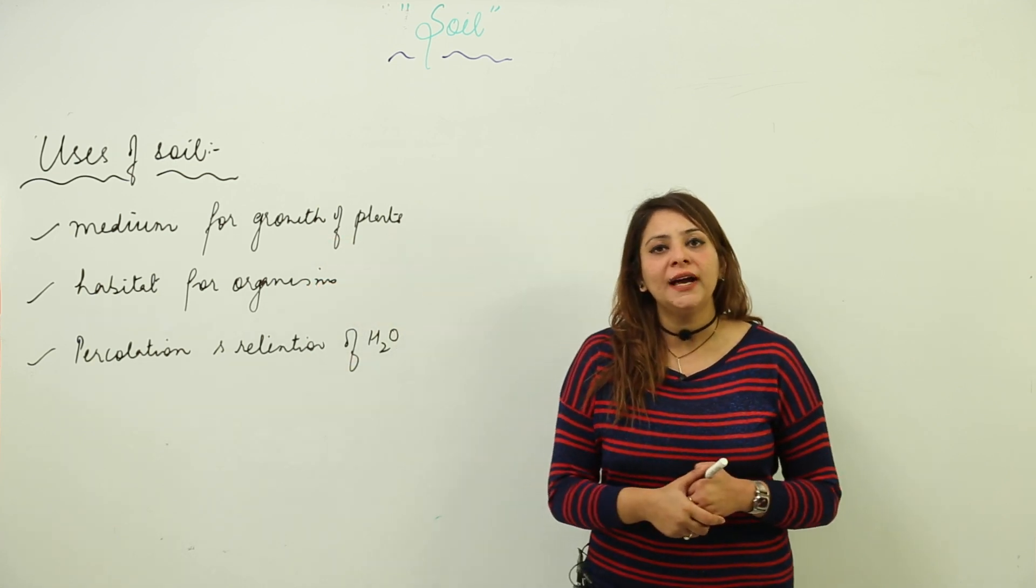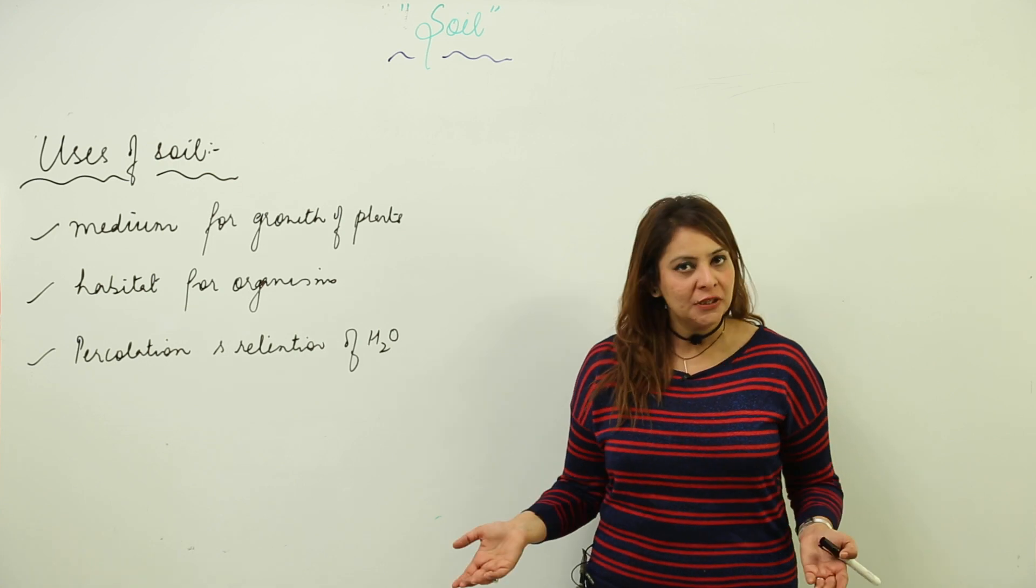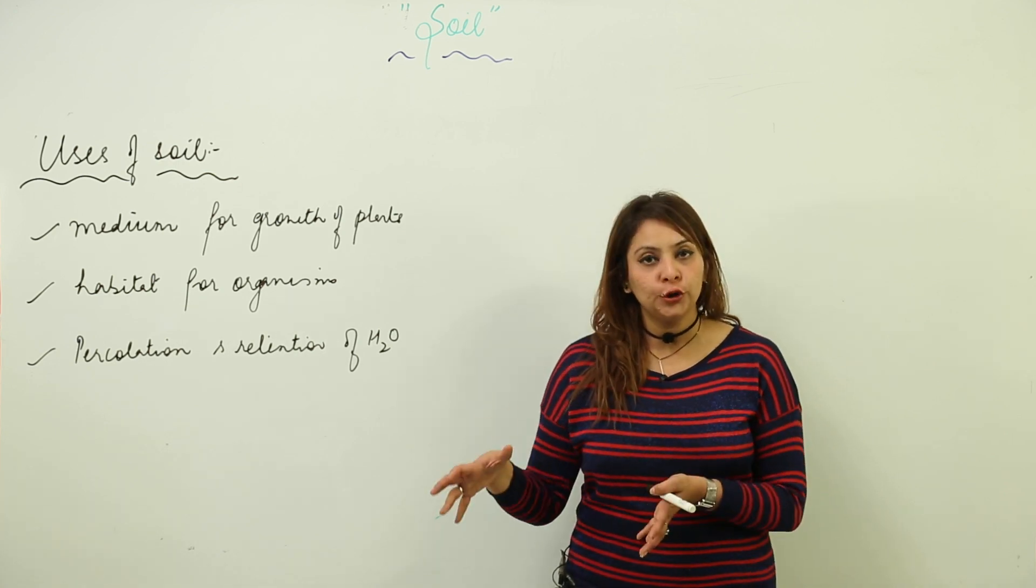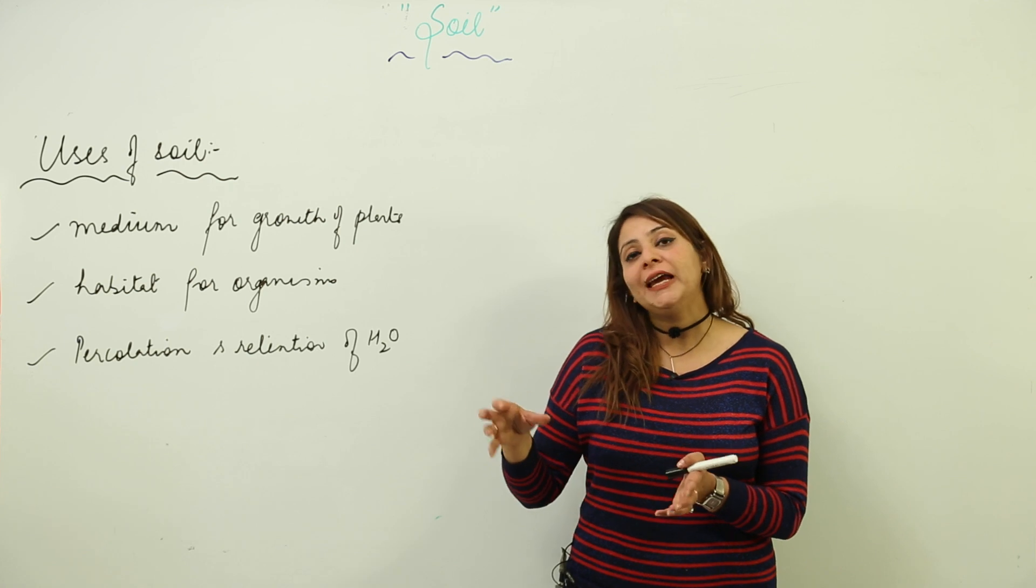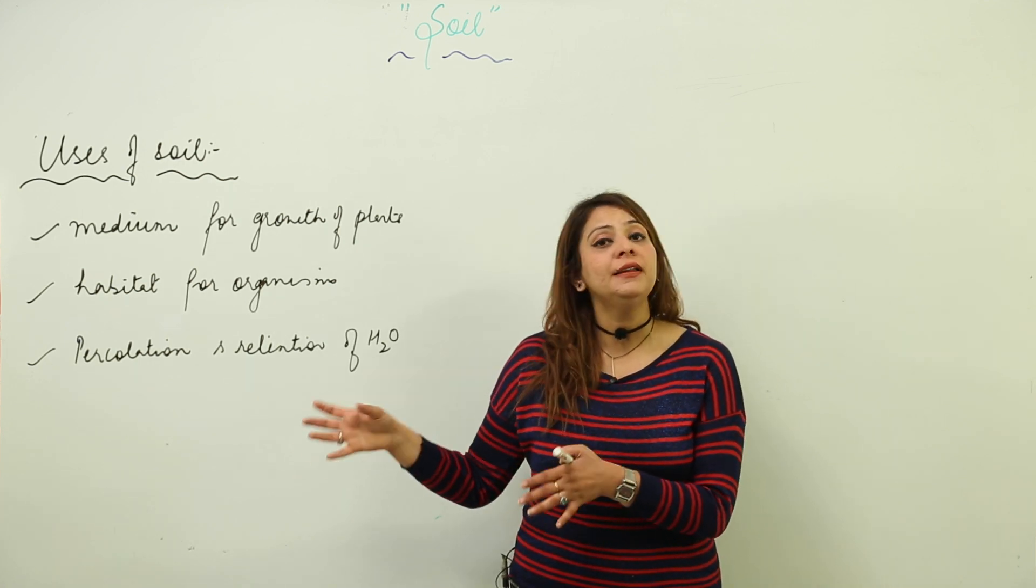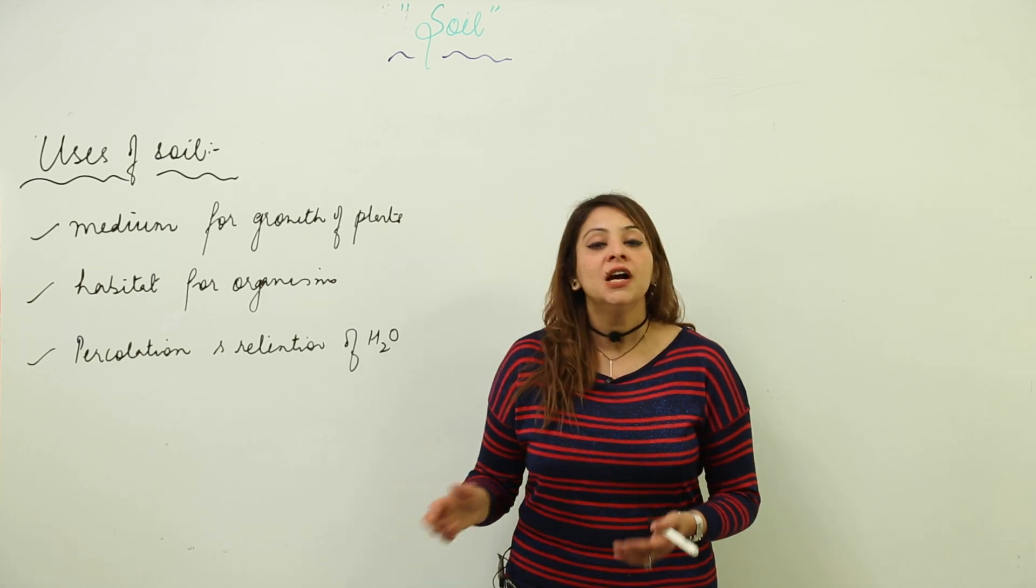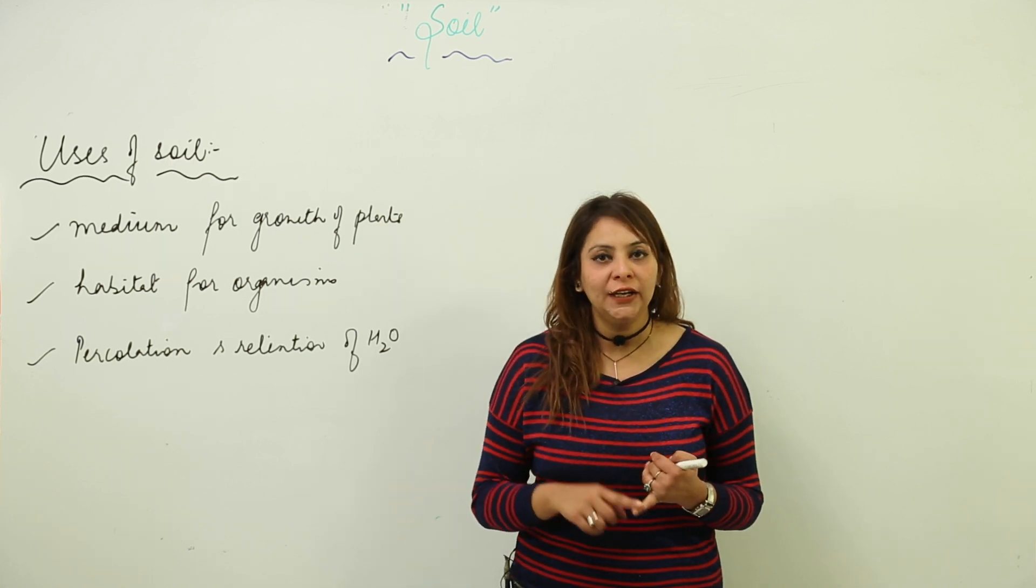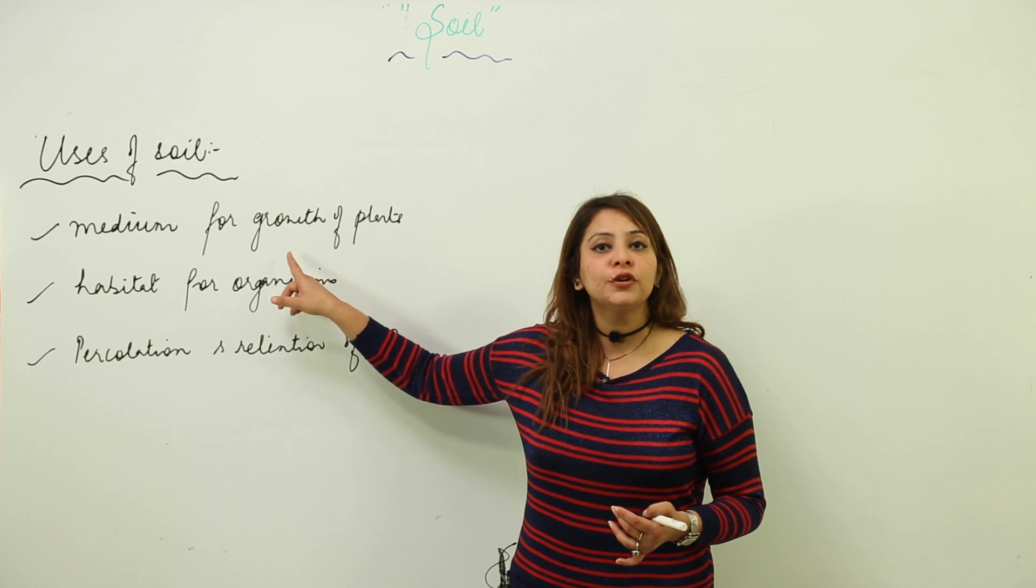As you all know, we are heterotrophs like all animals are heterotrophs, so they depend upon autotrophs for food. We can get food only from autotrophs and autotrophs are plants. Where do plants grow? They grow in soil. So soil is very important because it is a medium for the growth of plants.